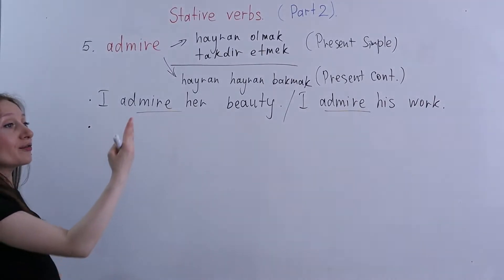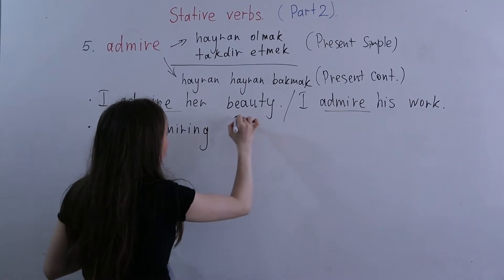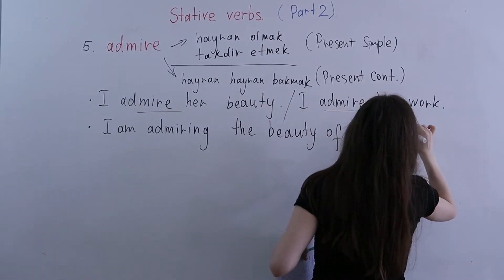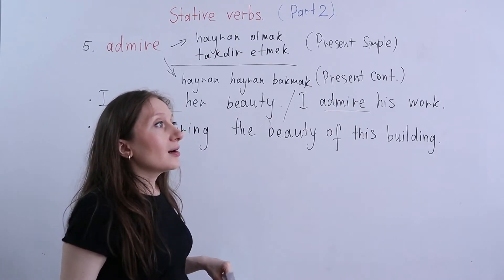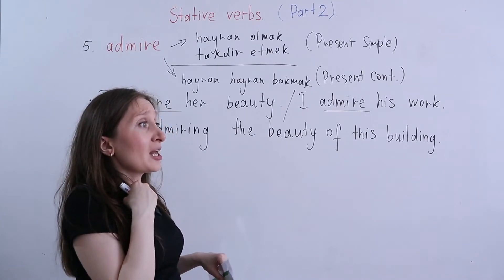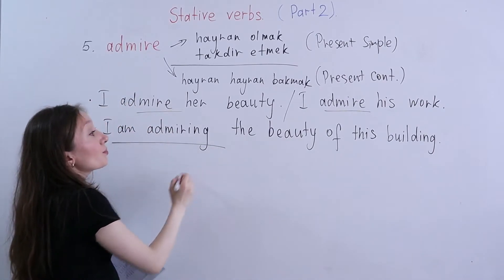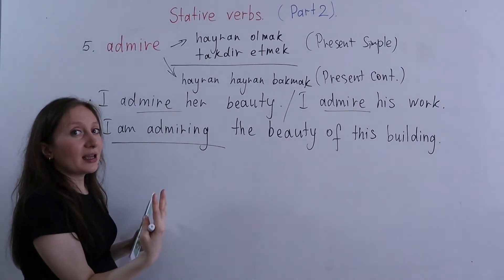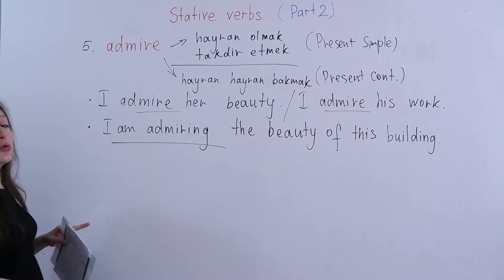The second meaning of 'admire' is hayran hayran bakmak — gazing admiringly at something right now — and we use present continuous. For example: 'I am admiring the beauty of this building' — it is happening right now, the process is ongoing, so we use present continuous with 'am' plus verb ING.